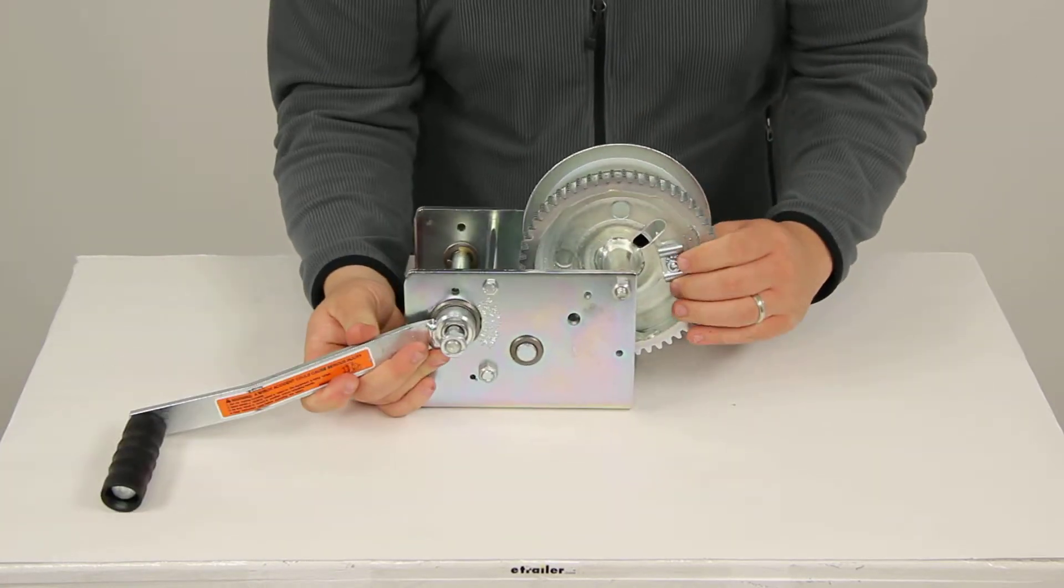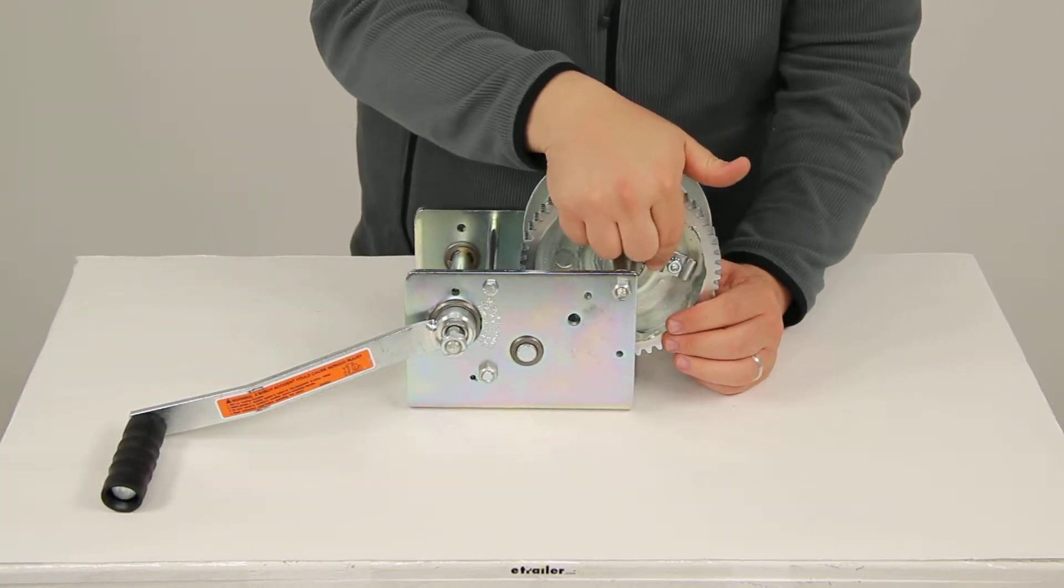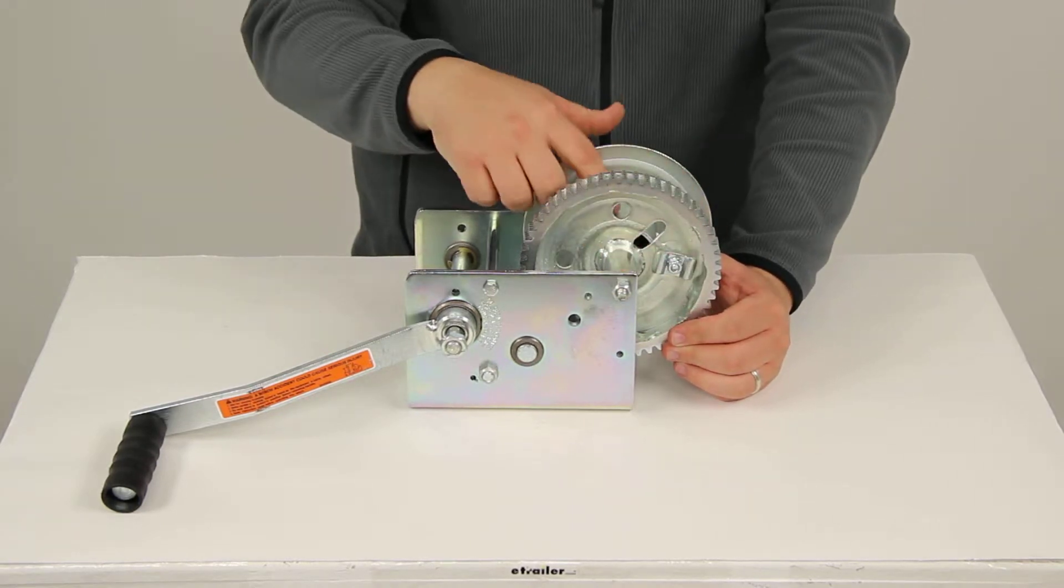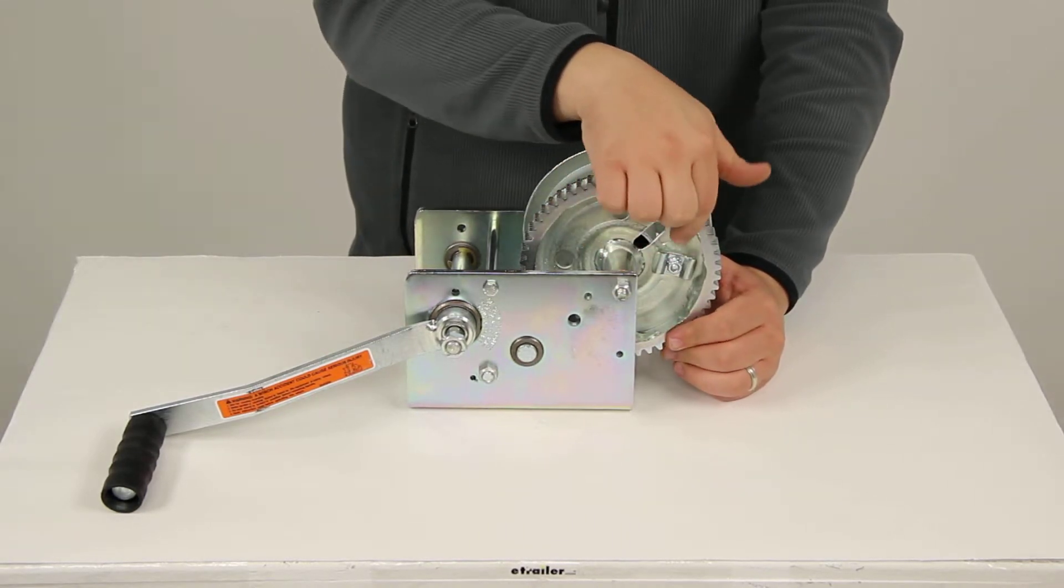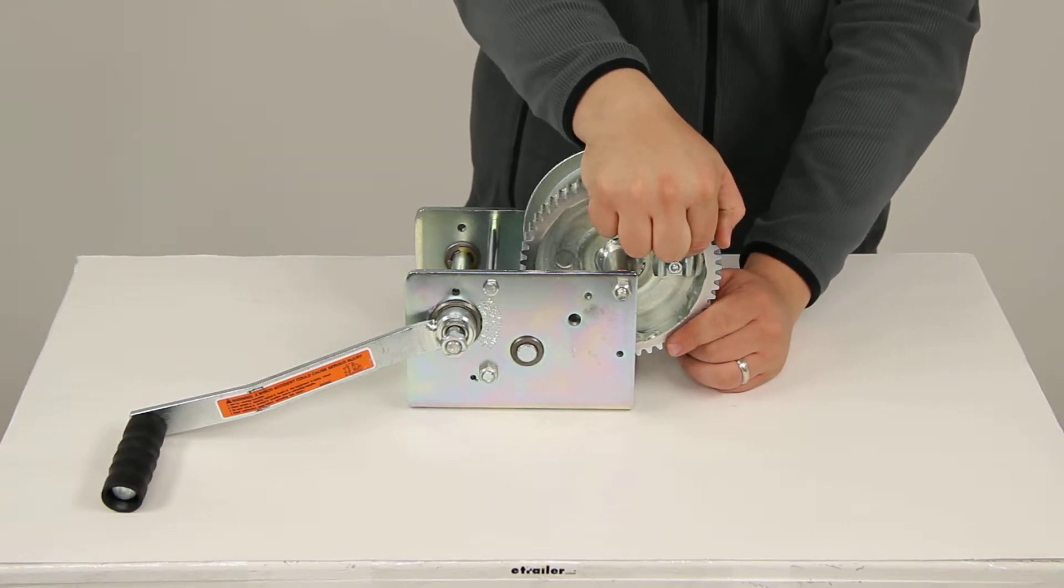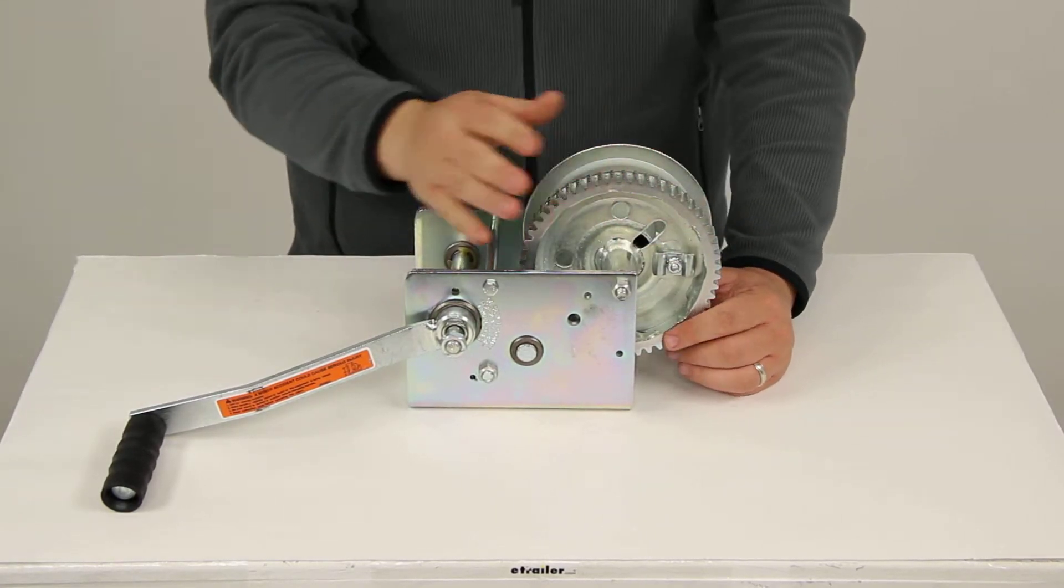And you can see here on the edge, I already installed it. This is just a cable catch kit. What that does is you can feed your cable through one of these holes, tighten it with that catch, and it's going to hold the end of your cable securely in place as you tighten up the rest of your line.